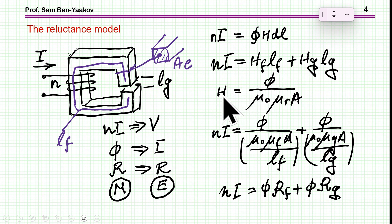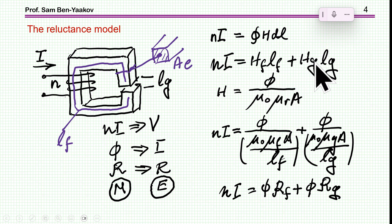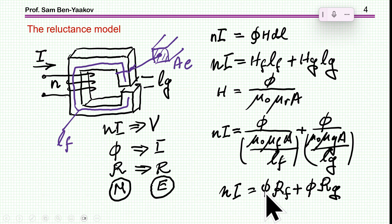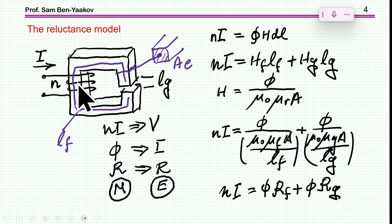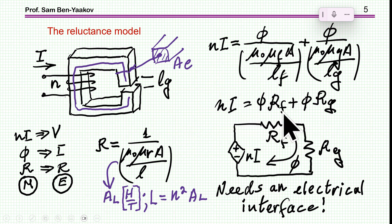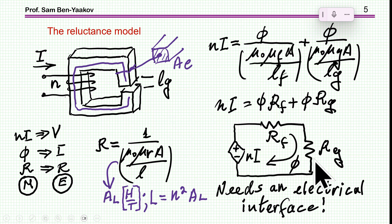Since the magnetic field is equal to the flux divided by mu-zero (vacuum or air permeability) times the relative permeability times the cross-section area, we can describe this relationship by this equation. We call one over this term the reluctance — this is the definition of reluctance. So we find that the MMF equals the flux times the reluctance of the ferrite plus the flux times the reluctance of the gap. The flux is the same throughout because it circulates around both the gap and the ferrite — neglecting fringing and other second-order effects.